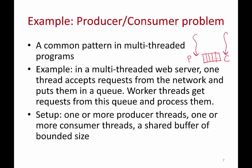This producer-consumer situation is a very common pattern. For example, in a multi-threaded web server one thread keeps reading requests from the network and putting them in a queue, while another thread processes those requests. Anytime multiple threads cooperate to do some task together you'll have a producer-consumer kind of situation. You can have one or more producer threads and one or more consumer threads sharing a buffer of a certain size.